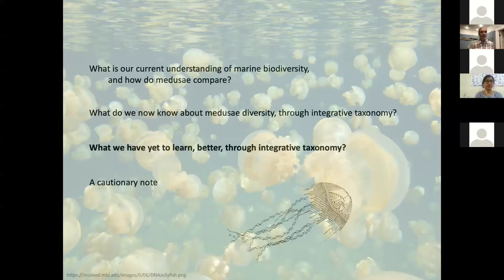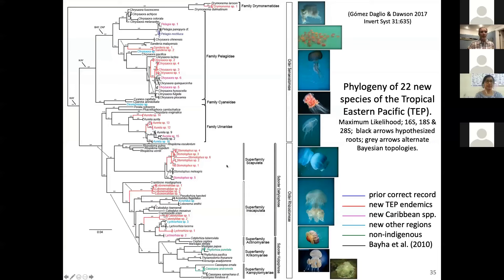To me, the really powerful thing about integrative taxonomy is that it's a way to generate lots of questions about biodiversity, leading to a better understanding of how that biodiversity is important and can affect us. This is illustrated in a complete phylogeny from Lisa's work in the tropical Eastern Pacific, where the new species she found — colored throughout the tree of Scyphozoa — come in many different forms.